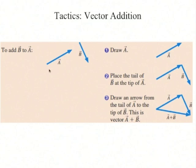To add two vectors, a plus b: first draw a, then place the tail of b at the tip of a, and draw an arrow from the tail of a to the tip of b. This new vector is a plus b.